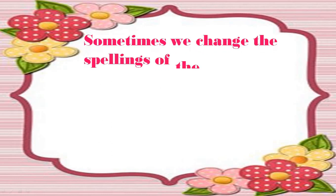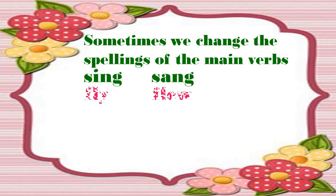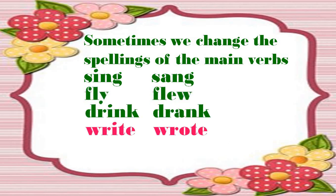Now, the next step is: sometimes we change the spellings of the main verbs to make them simple past form. Sing → sang. The spellings have been changed — in place of 'i', I have used 'a'. Fly → flew, drink → drank, write → wrote.